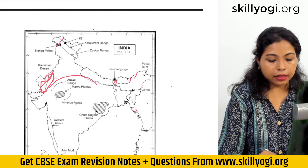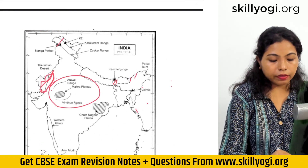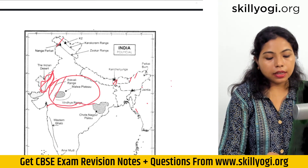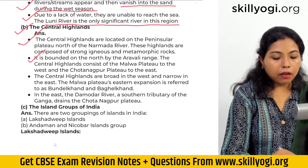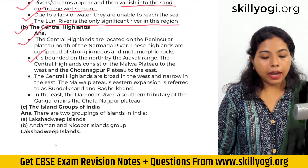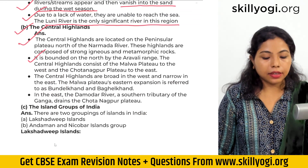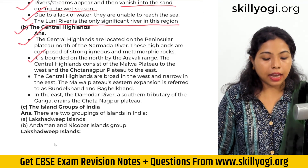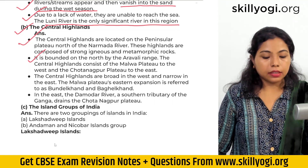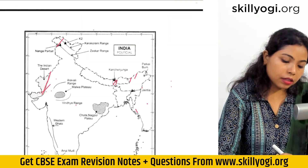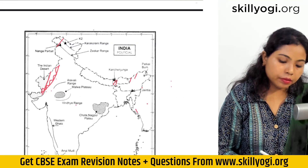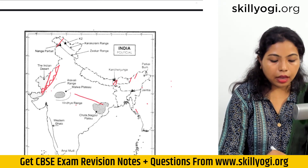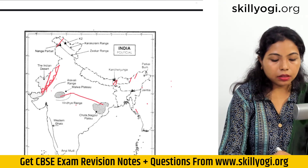The Central Highlands are situated here. Here is the Narmada River and the Central Highlands are situated. It is bounded on the north by the Aravalli Range. The Central Highlands consist of Malwa Plateau to the west and Shotanakpur Plateau to the east. The Aravalli Range is situated here, with Shotanakpur Plateau in the east and Malwa Plateau in the west.